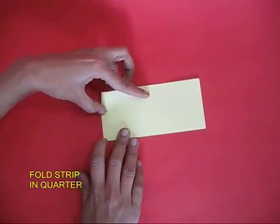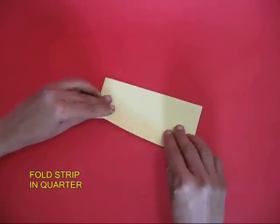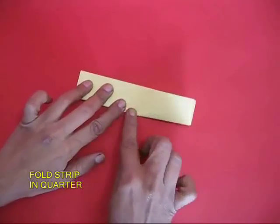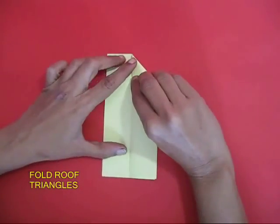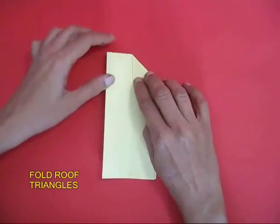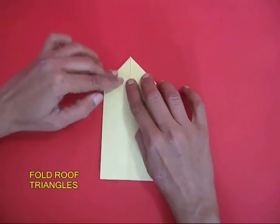Fold this long strip first into a half and then into a quarter. Open the strip and on the fold make two small triangles like a small roof.